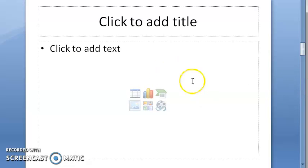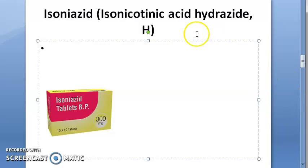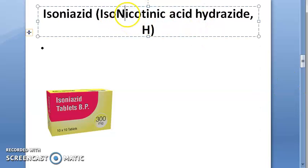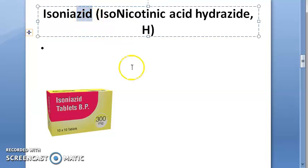Now moving on to isoniazid in detail. Isoniazid is actually isonicotinic acid hydrazide — it is a nicotinic acid derivative. It is denoted by the letter H.